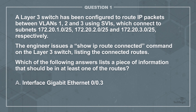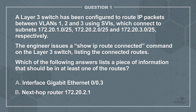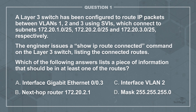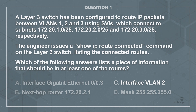A: Interface Gigabit Ethernet 0.0.3. B: Next Hop Router 172.20.2.1. C: Interface VLAN 2. Or D: Mask 255.255.255.0. The correct answer is C, because on a Layer 3 switch we can enter SVI configuration mode for VLAN 2 using the Interface VLAN 2 command.